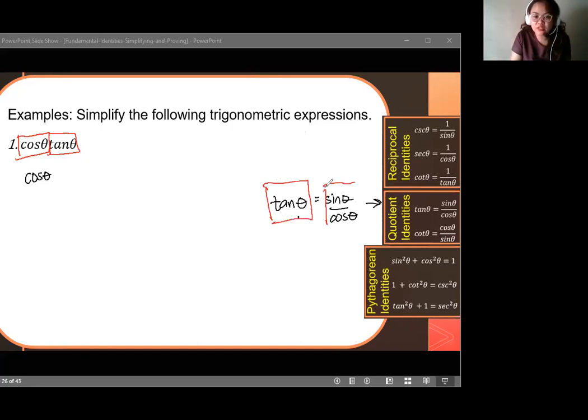Ang tangent daw, parehas lang kung sine over cosine. So isipin mo, ang tangent, yan yung longer piece. Si sine over cosine, siya yung dalawang piraso ng Lego mo, pero pag pinagsama mo, kasukat lang niya to. Ibig sabihin, I could change tangent to sine over cosine. Papalitan ko niyan kasi they're one and the same banana. So cosine times, I changed tangent using your quotient identity. I changed that to sine theta over cosine theta. Again, what we used is your quotient identity.